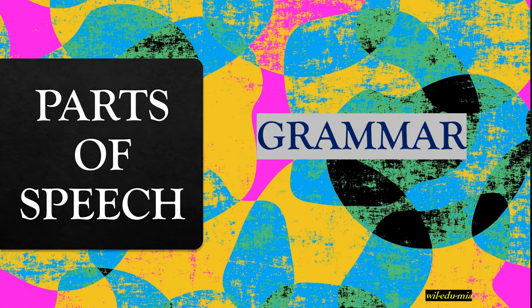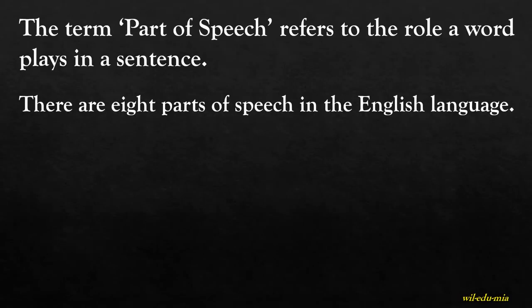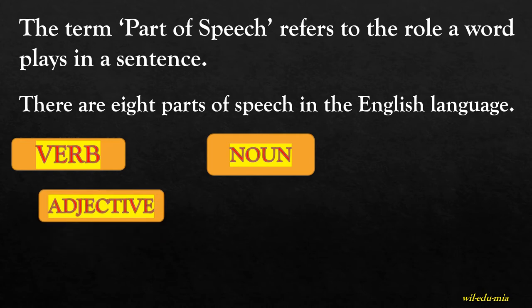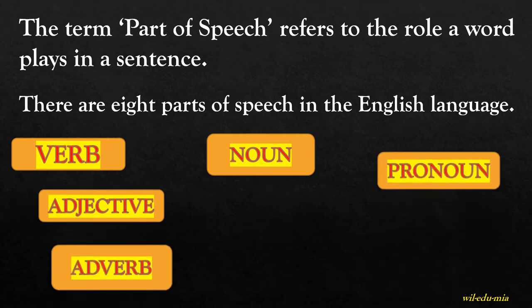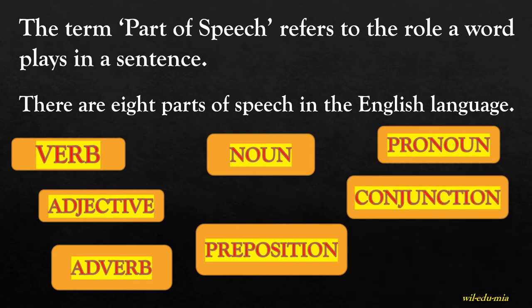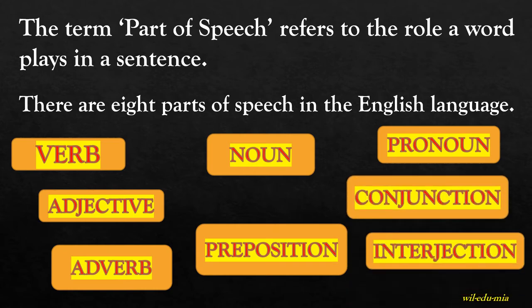The term 'part of speech' refers to the role a word plays in a sentence. There are eight parts of speech in the English language. They are: noun, verb, adjective, adverb, pronoun, preposition, conjunction, and interjection. Now we try to understand all of these.